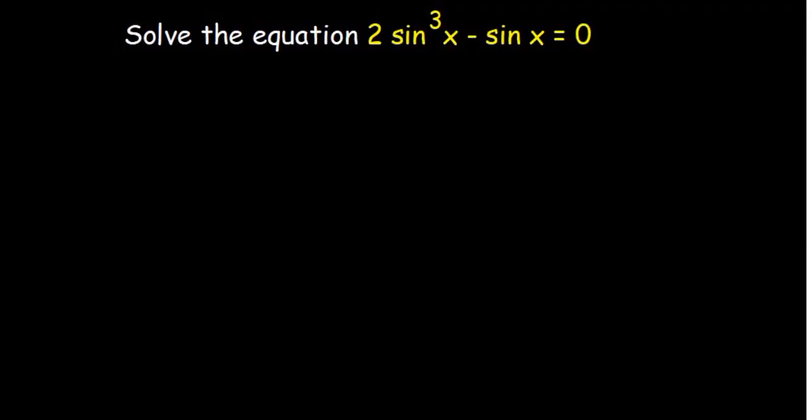Let's answer this trigonometric function equation that we've been given. So basically we have 2sin³x - sinx being equal to 0.